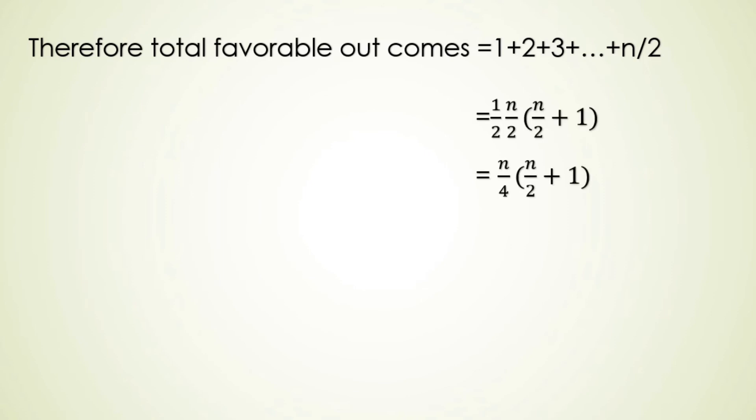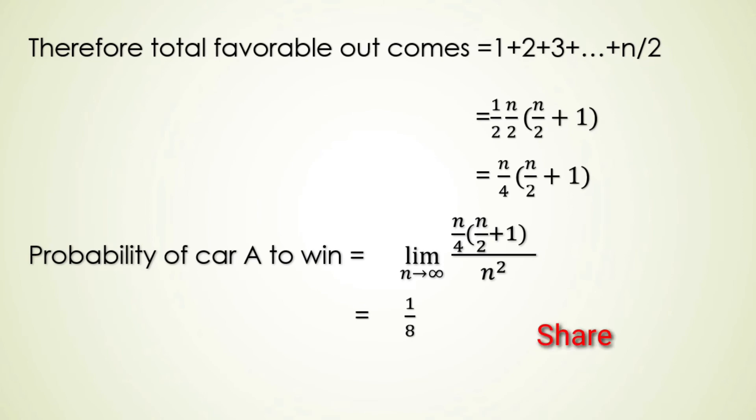We can calculate the total number of cases by adding all these: 1 + 2 + 3 up to n/2, and we get it equal to n/4 times (n/2 + 1). Now probability of Car A to win is equal to limit n tends to infinity of n/4 times (n/2 + 1) upon n squared, and that is equal to 1/8. With its help we can calculate the probability of Car B to win equal to 1 minus 1/8, which is equal to 7/8, and that's our solution.